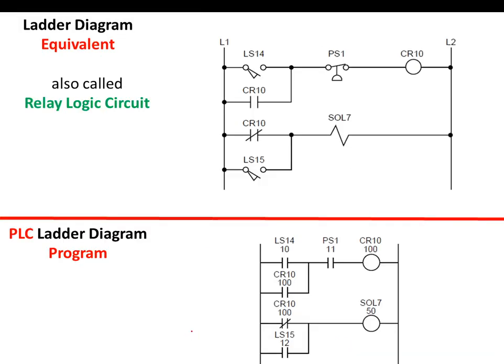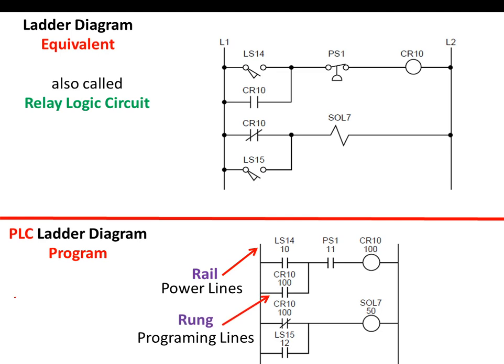Here we can see two ladder diagrams: one representing the relay logic circuit at the top, and at the bottom representing the PLC ladder diagram. At first sight they look the same; however, they are different. The vertical lines are called rails and the horizontal lines are called rungs.